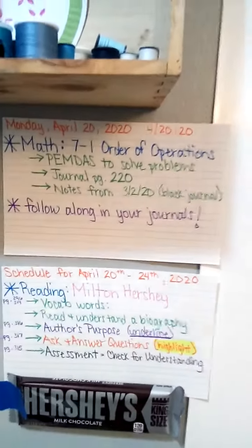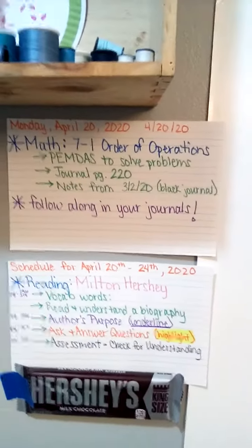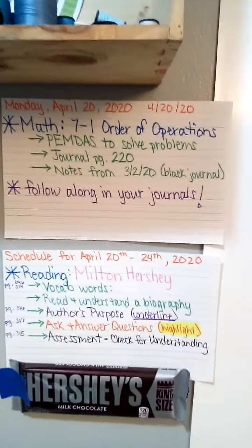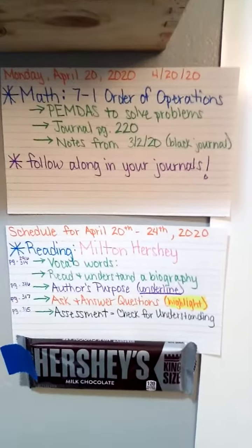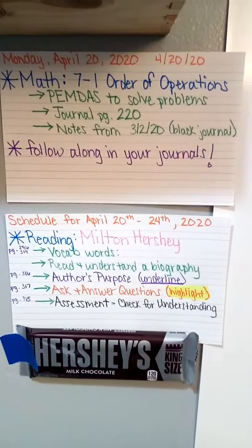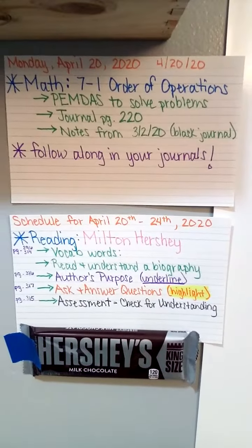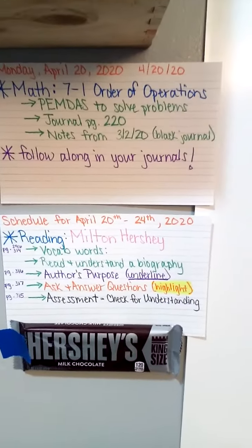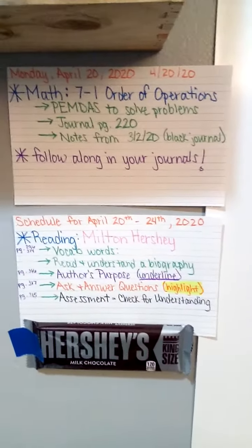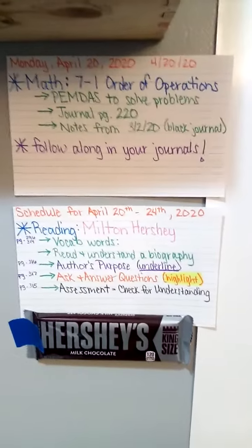To do that, we're going to be using our math journal, page 220, and we are going to be working from our notes from March 2nd, way back when we were still together. And that's in your black math journal, so you can use both of those for this lesson.